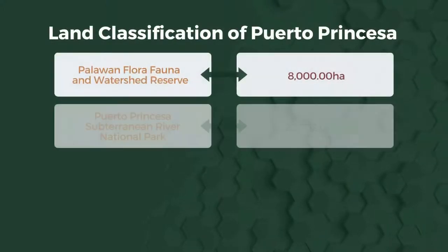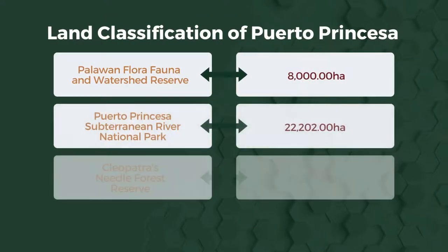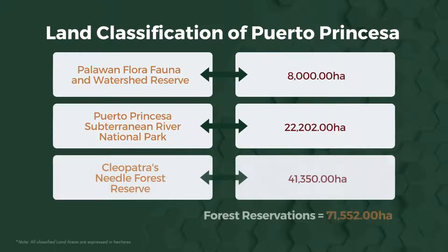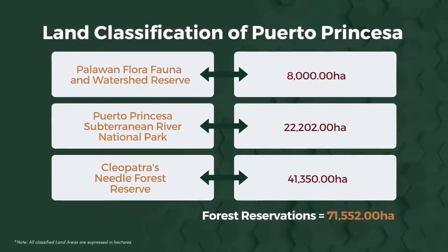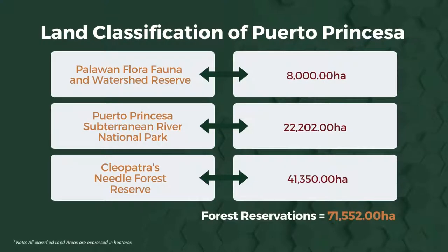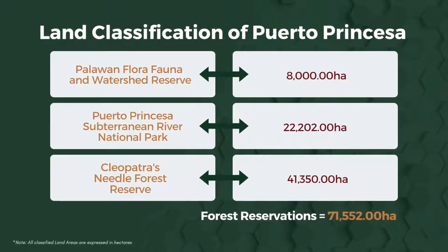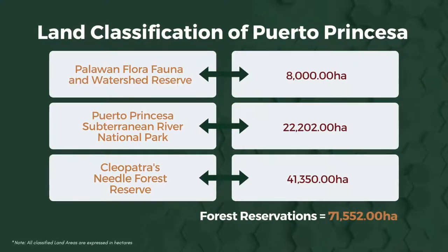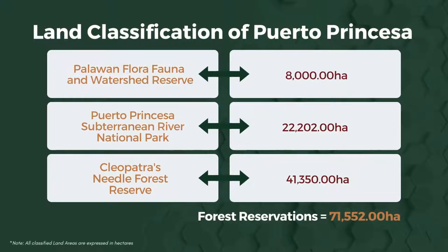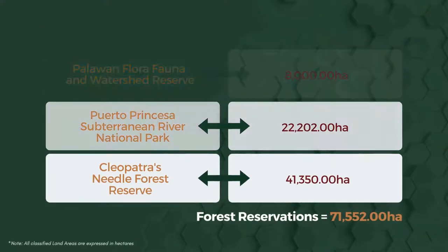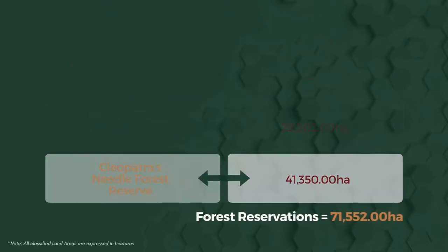The Palawan flora, fauna, and watershed reserve has a total area of 8,000 hectares. The Puerto Princesa Subterranean River National Park, voted in 2012 as one of the New Seven Wonders of the World, spans 22,202 hectares. Cleopatra's Needle Forest Reserve covers 41,350 hectares and is one of the oldest and most diverse forests in the country, declared as a critical habitat. The total area for forest reservation is 71,552 hectares.